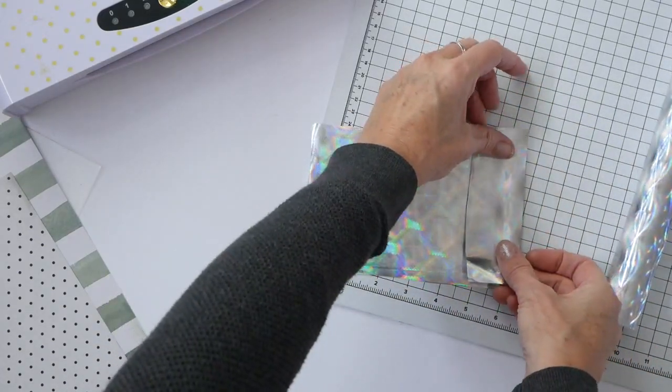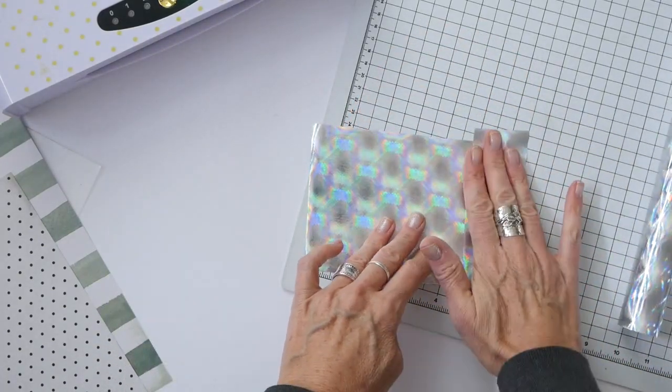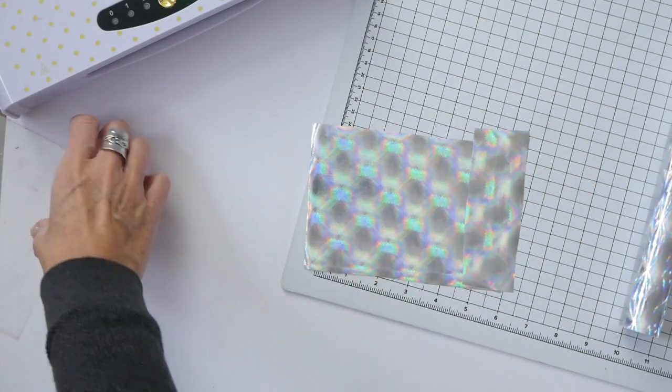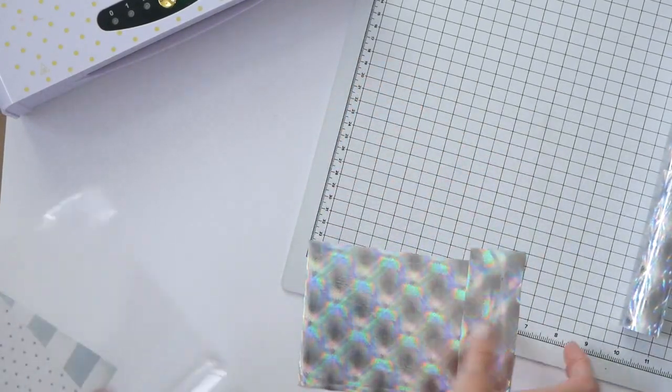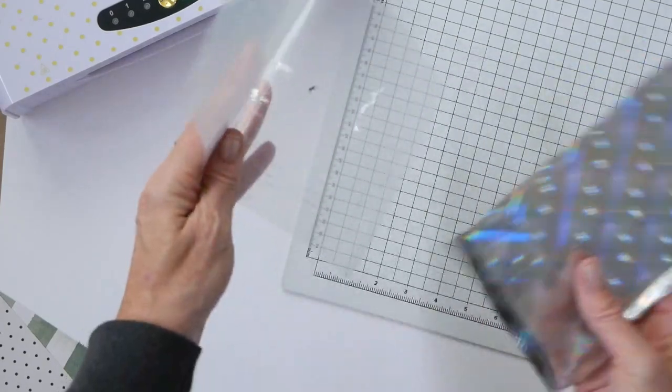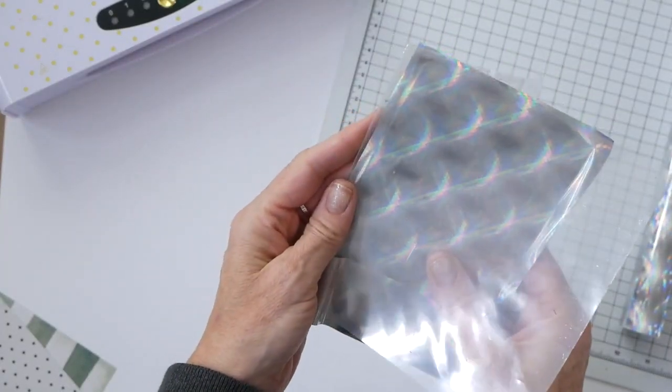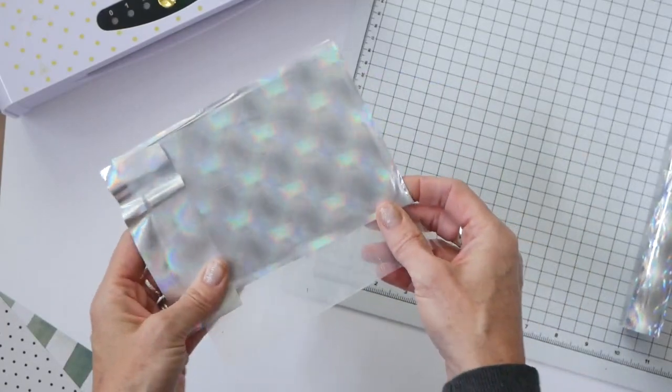Like I said I could probably go ahead and peel this up but I'm going to run it through the machine just to make sure I have really good even coverage. That's my goal here. I'm going to run that through the machine and then show you how that turned out.